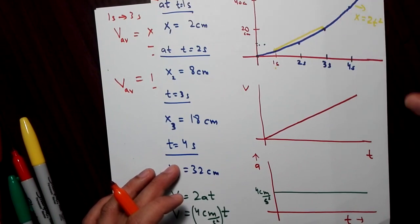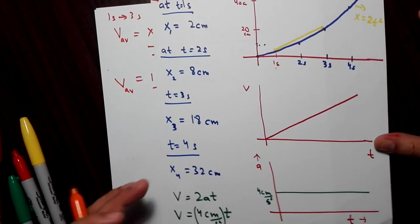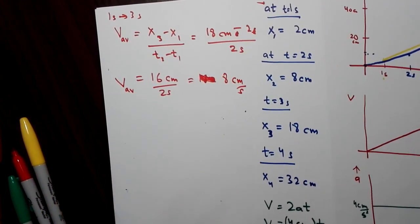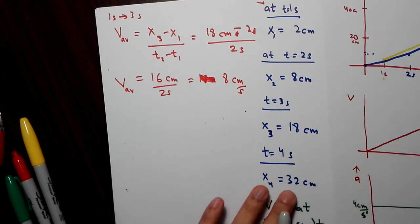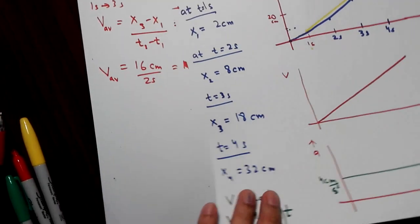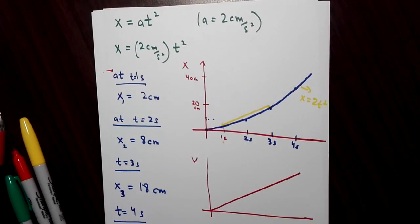Remember the difference: instantaneous velocity is the tangent, and average velocity is the slope of the straight line joining the two points. I hope the difference between average and instantaneous velocities is clear. Thank you for watching — if you have any questions please post them in the comments.